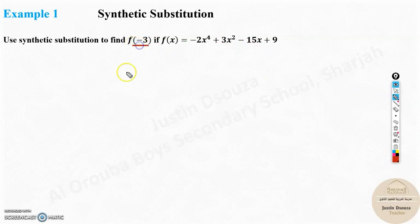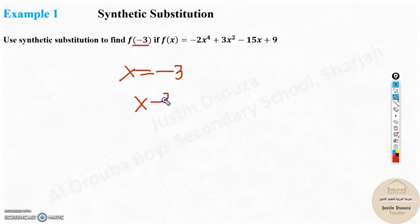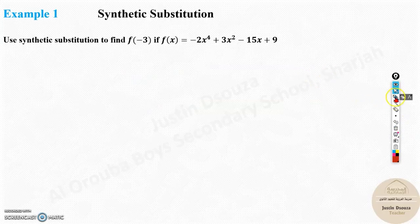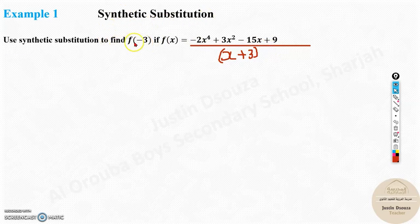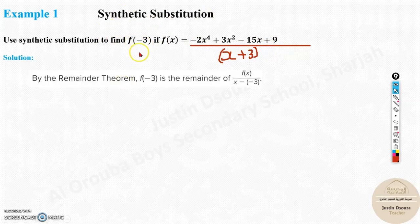You can see over here, x equals minus 3. So what exactly happens is, this comes inside, making the term x plus 3. Let's do the synthetic substitution — f(x) divided by the given term will be plus 3. When we do synthetic substitution, we have to change the sign. So in the remainder theorem, you can directly take the answer.